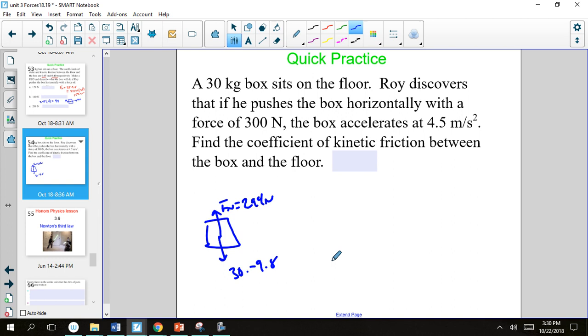The first thing we've got to figure out is what our net force is. So 30 times 4.5 gives us a net force of 135 newtons.